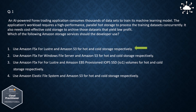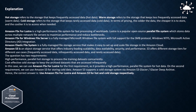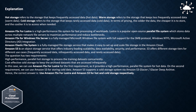The correct answer is: Use Amazon FSx for Lustre and Amazon S3 for hot and cold storage respectively. Hot storage refers to the storage that keeps frequently accessed data. Cold storage refers to the storage that keeps rarely accessed data. In terms of pricing, the colder the data, the cheaper it is to store, and the costlier it is to access when needed.